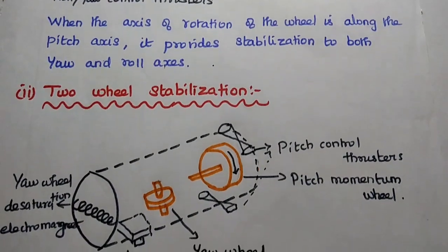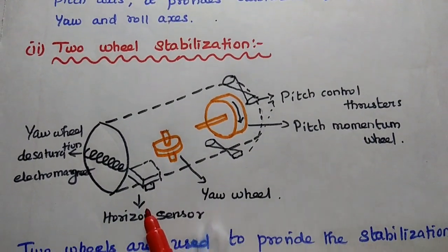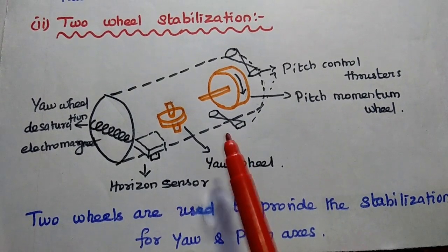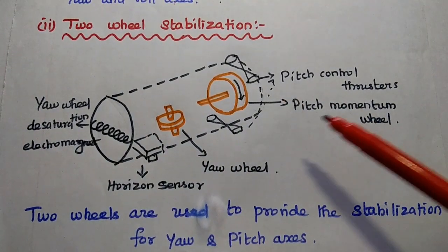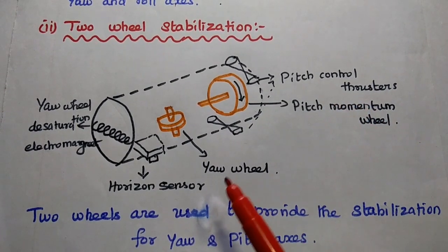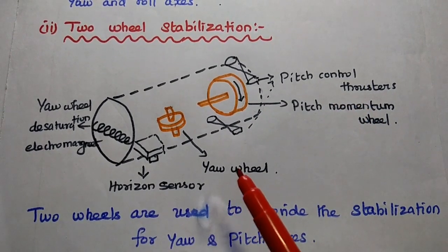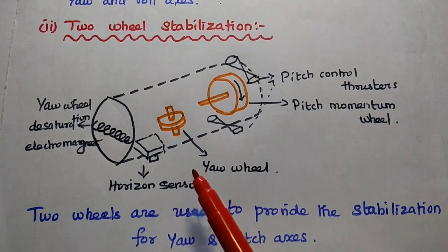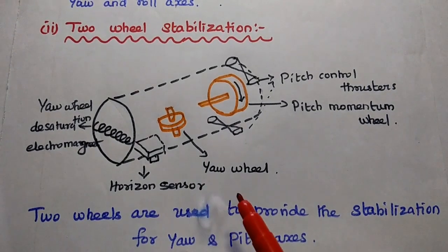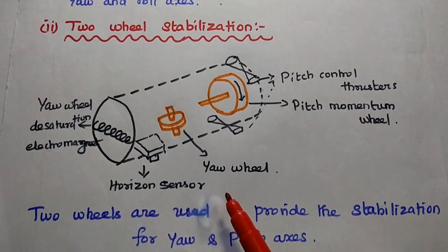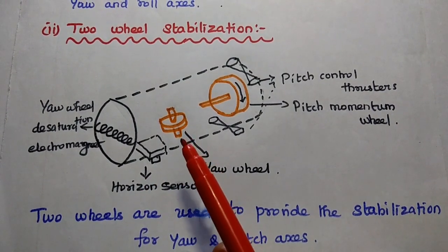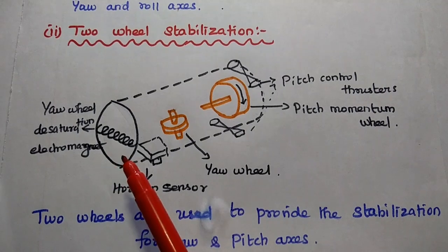In two-wheel stabilization, two wheels are used: a pitch momentum wheel to control the pitch attitude, and a yaw momentum wheel to control the yaw axis. The desaturation of the yaw wheel can be done using electromagnets.